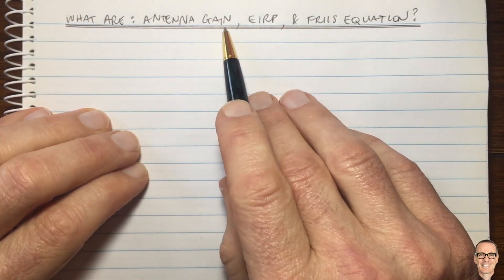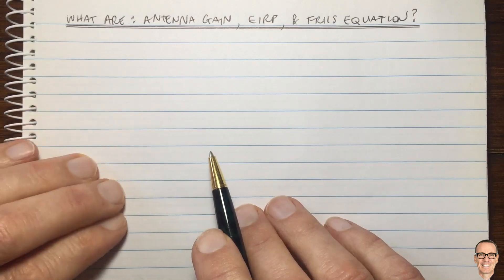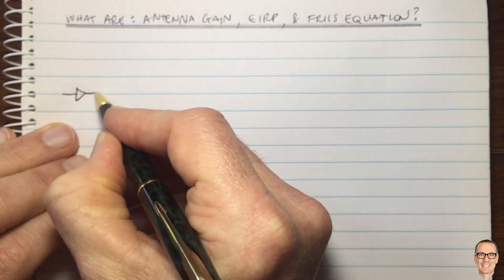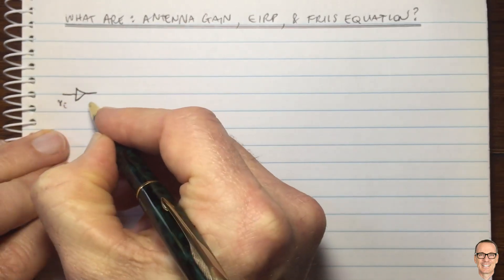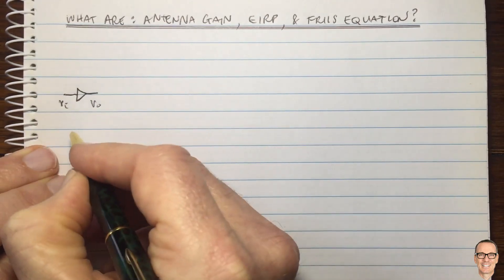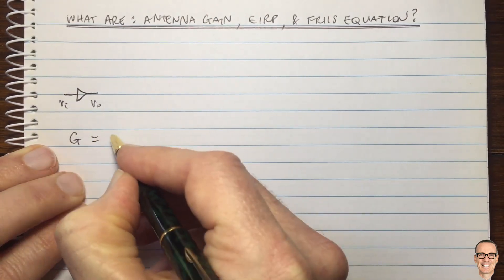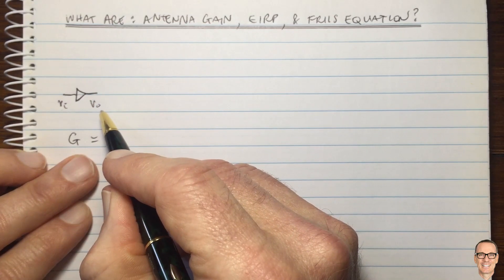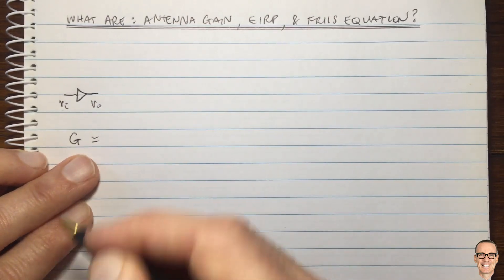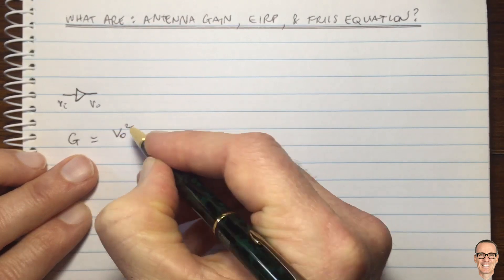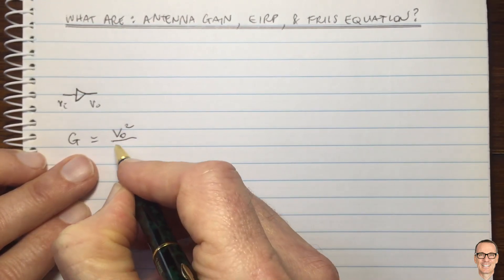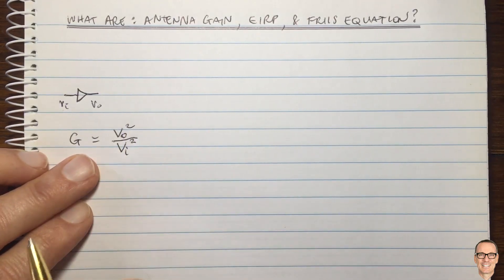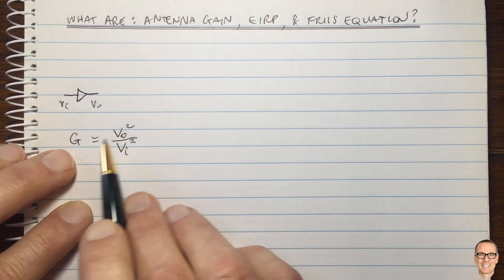Let's first think about gain. We often think about gain in terms of an amplifier with a voltage input and a voltage output. We define the gain to be equal to the power output divided by the power input. For an electrical circuit, power is V squared divided by R, so the gain is V_out squared divided by V_in squared.